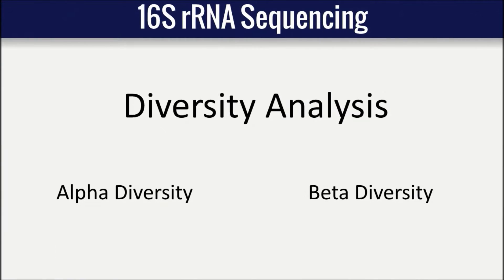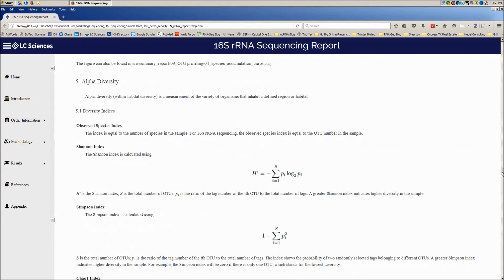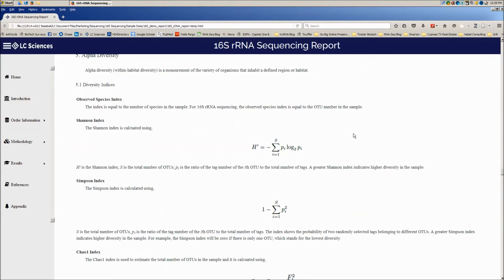LC Sciences' comprehensive service includes both alpha and beta diversity analysis. Alpha diversity is a measurement of the variety of organisms that inhabit a defined region or habitat. LC Sciences calculates diversity based on the Shannon, Simpson, Chow-1, and observed species indices.